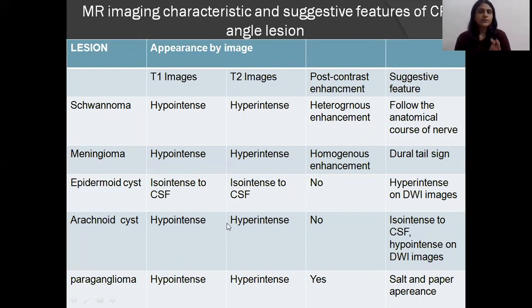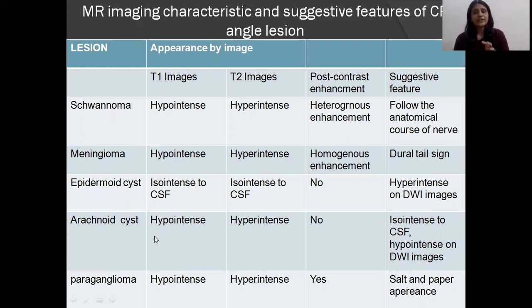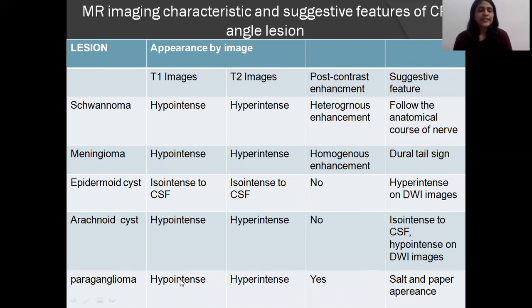These are the characteristic and suggestive features of CP angle lesions to differentiate the various types: in schwannoma, there is an ice-cream cone appearance; in meningioma, there is a dural tail sign. Epidermoid cysts and arachnoid cysts can be differentiated by diffusion-weighted images — diffusion restriction is present in epidermoid cyst but absent in arachnoid cyst. Paraganglioma shows the salt-and-pepper appearance, which is pathognomonic, with heterogeneous hypointensity on T1 and hyperintensity giving a salt-and-pepper pattern.